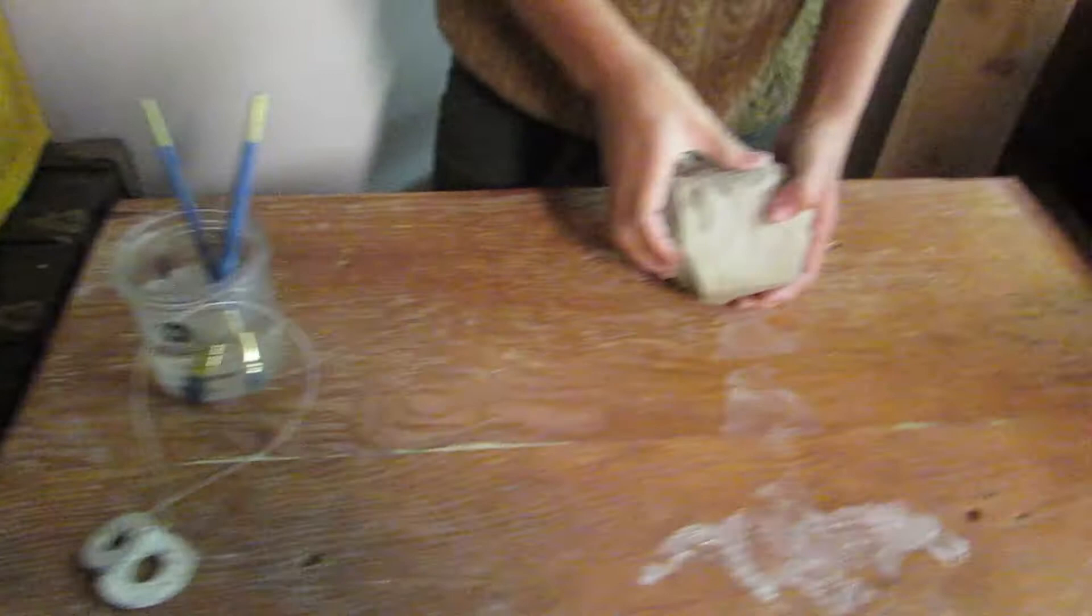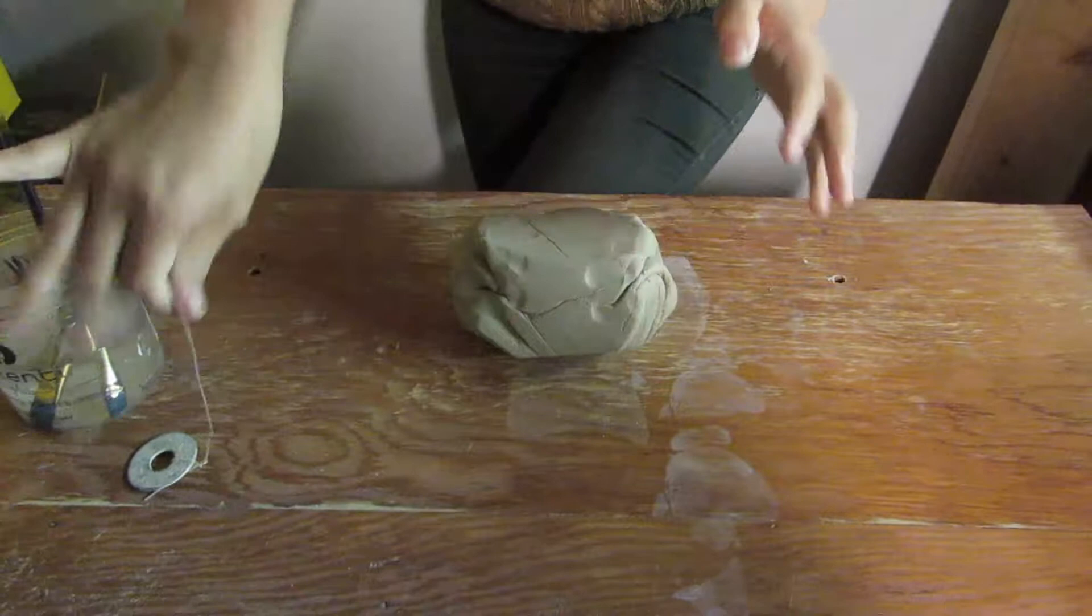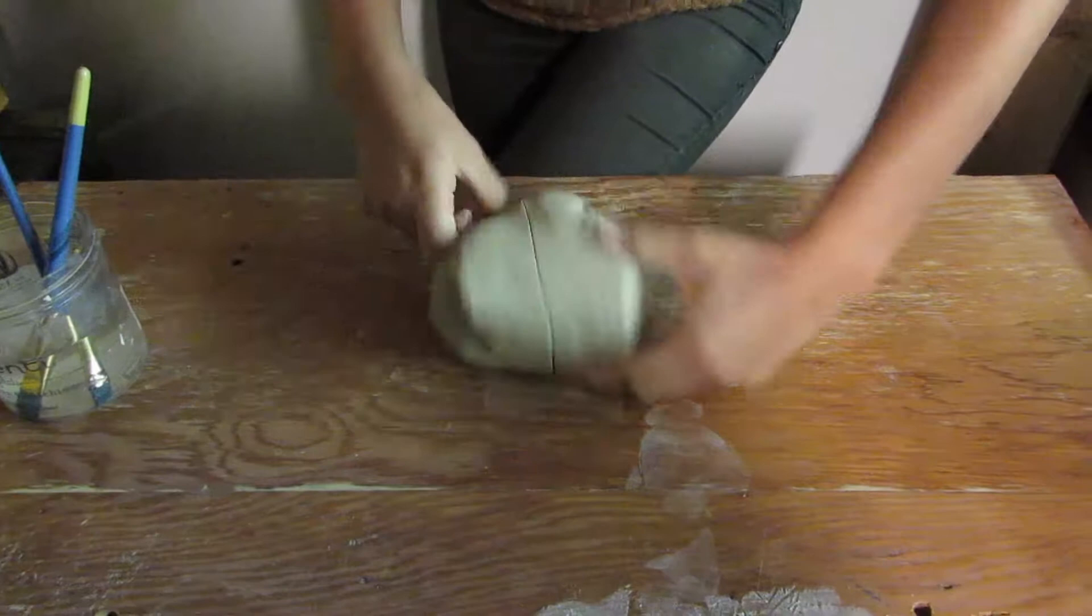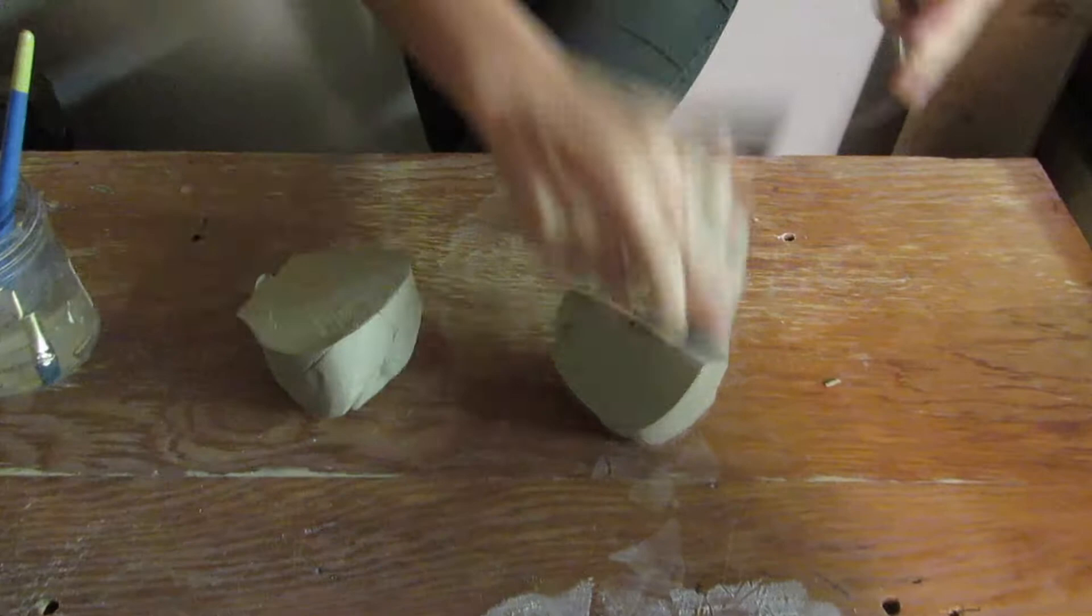So first, what we're going to do is knead the clay to get the air bubbles out. You have to knead it. You don't want to smear. You just want to knead it for a bit. After kneading for a bit, you get the fishing line and you cut it to make sure there are no air bubbles. You cut it to make sure there's no air bubbles. And then you put it back together.